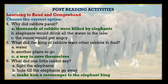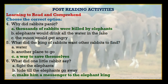Next: what did one little rabbit say? Options are: fight the elephants; hide till the elephants go away; make him a messenger to the elephant king. And the right answer is: make him a messenger to the elephant king. Students, hope your all answers are right. Let's move to the next activity.